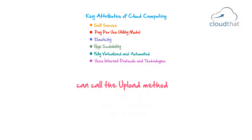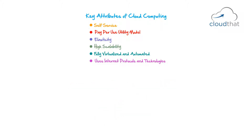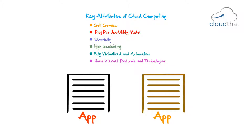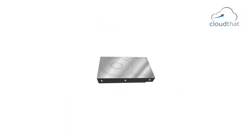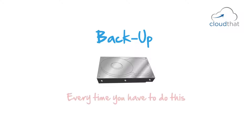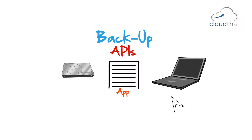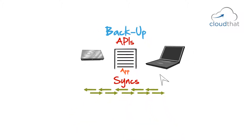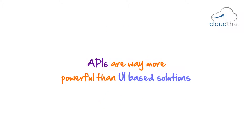With the API, you don't need a human to click upload in the UI. You can call the upload method, give the file name, and the file is automatically uploaded. Similarly, you can call the download method, give the file name, and the file gets downloaded. This enables you to write another application that interacts with the cloud application to upload and download data without requiring humans. For example, instead of manually selecting files every time, you can create an application that automatically syncs your data every time you start your laptop — a much better solution than manually uploading files. APIs are far more powerful than UI-based solutions.